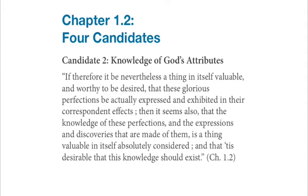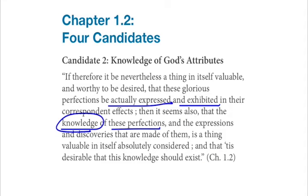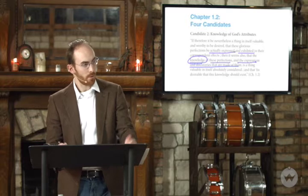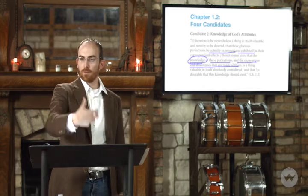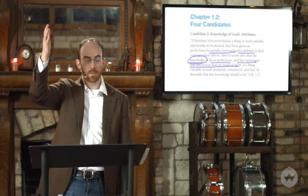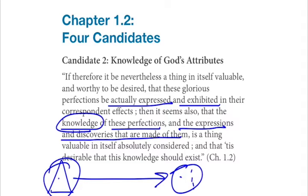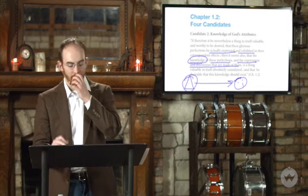But if God is displaying, who is he displaying to? Edwards quotes: 'If it is a thing valuable and worthy to be desired that these glorious perfections be actually expressed and exhibited in their correspondent effects, then it seems the knowledge of these perfections is a thing valuable in itself — and it's desirable that this knowledge should exist.' If there's a display, there ought to be a receiver — someone to see it and gain knowledge of God's attributes. That's candidate number two: knowledge of God's attributes.